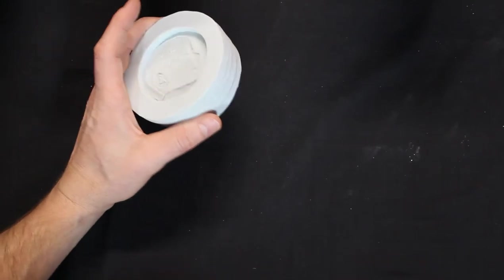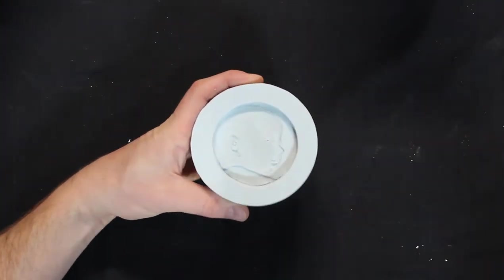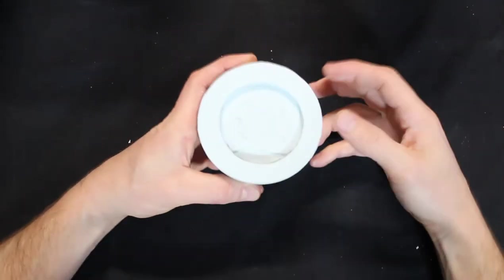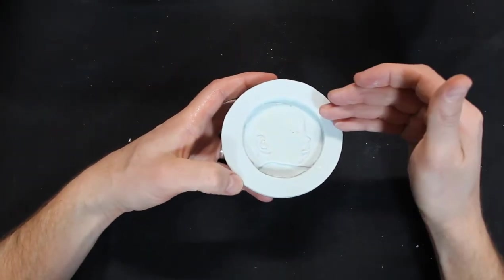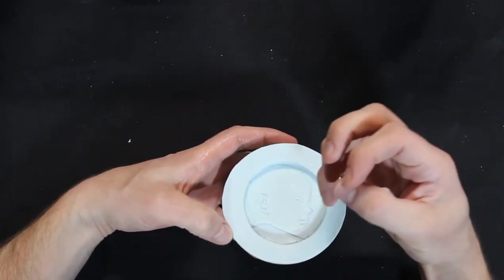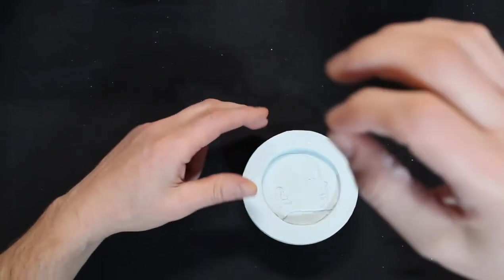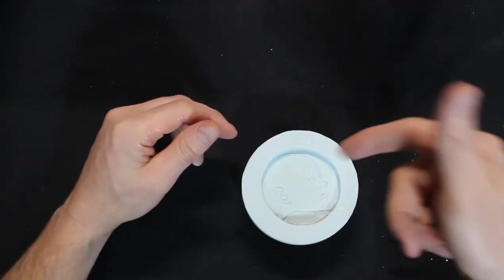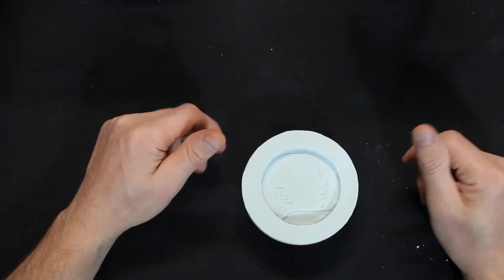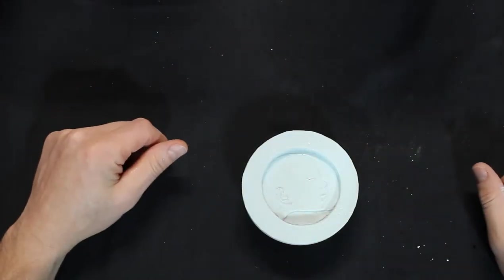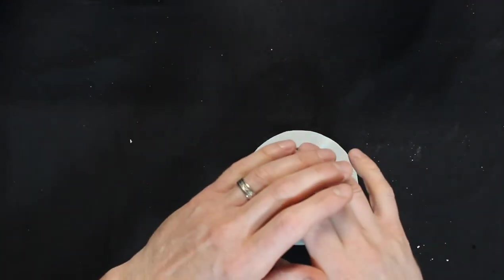And what that does is actually displaces the water that is in the plaster. Just give it a simple coat, maybe two, so it's just misted. What ends up happening is when you pour in your plaster, all of a sudden that water tension, or like if you put a droplet of water on glass, you can see it kind of sitting there in like a droplet.